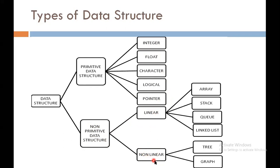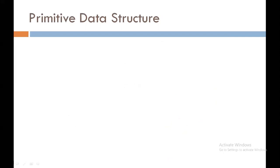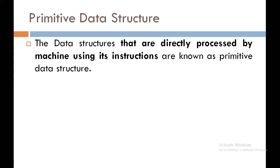Non-linear data structure means data items are not stored sequentially. Linear data structure is divided into four categories: array, stack, queue, and linked list. Non-linear data structure is divided into two categories: tree and graph. The data structures that are directly processed by machine using its inbuilt instructions are known as primitive data structure, and they are completely handled by the machine.